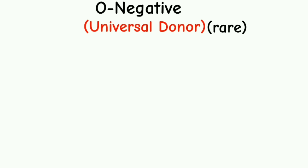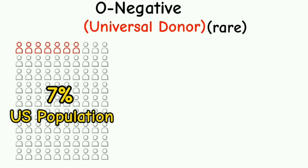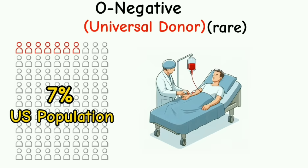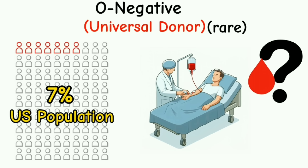O negative, the universal donor, is one of the rarest blood types. Only 7% of the US population has this type. It is most commonly used for blood transfusions when the blood type is unknown.